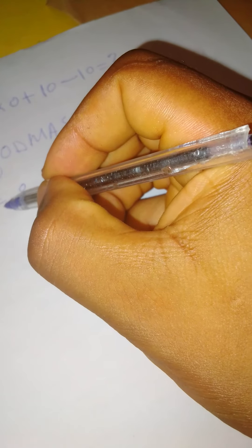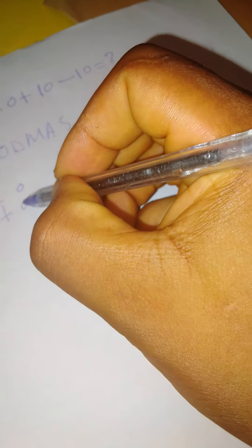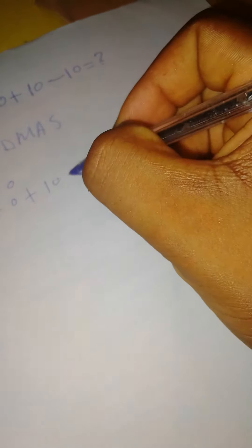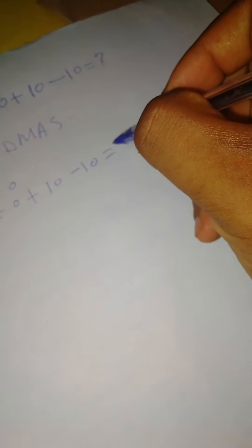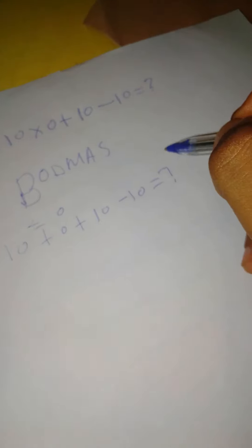Now I know that I'm supposed to multiply 10 times 0. It will be equal to 0. So the next point is 10 plus 0 plus 10 minus 10 equals question mark.